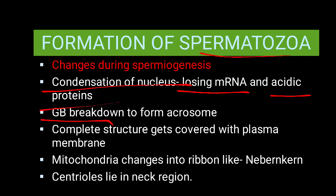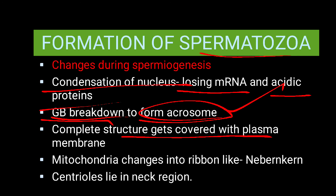The Golgi bodies break down and form the acrosome — remember this structure name: acrosome. The acrosome contains hydrolytic enzymes. The entire structure gets covered by the plasma membrane. Most of the cytoplasm gets lost during this process.